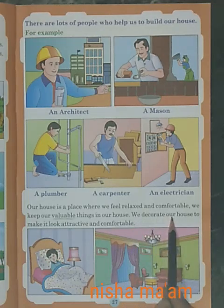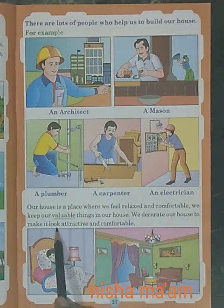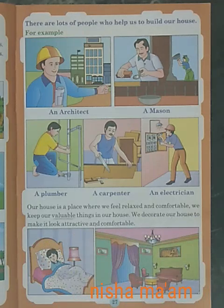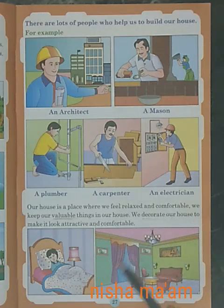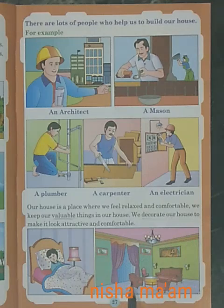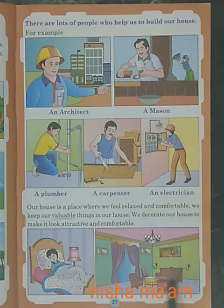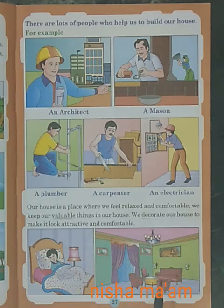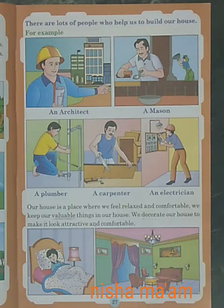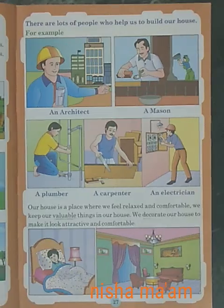We decorate our house to make it look attractive and comfortable. हम हमारे घर को सजाते हैं — decorate means सजाना — जैसे के curtain लगाना अलग-अलग color के, lights लगाना, sofa पे design करना, pictures लगाना, lamp लगाना, color करना — ये सब करके हम हमारे घर को अच्छा दिखाते हैं।